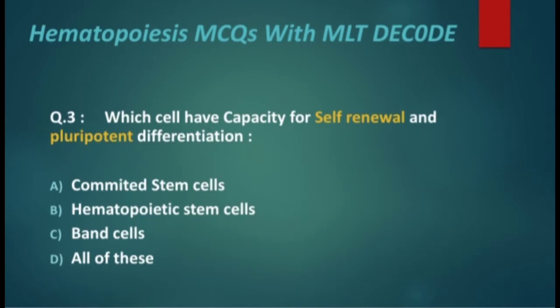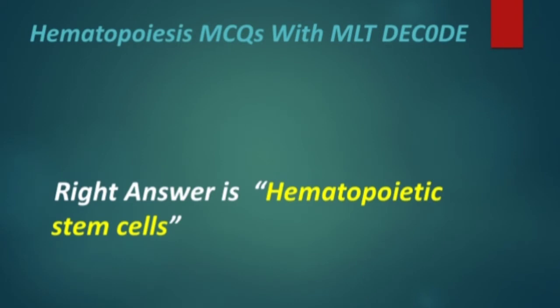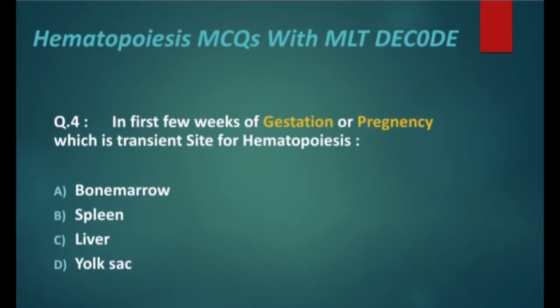Next MCQ: which cell has the capacity for self-renewal and pluripotent differentiation — committed stem cells, hematopoietic stem cells, band cells, or all of these? The right answer is hematopoietic stem cells.